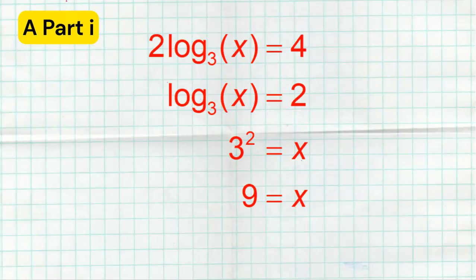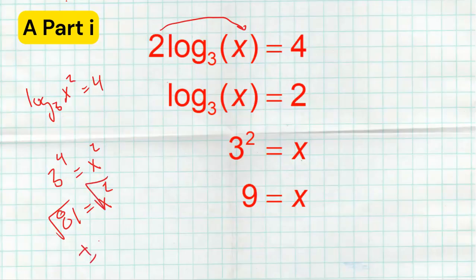Pretty easy question there. Now there is another way you could do it. You could move the 2 up as an exponent first. So you get log base 3 of x squared equals 4. Then we could write that as 3 to the 4th equals x squared. 3 to the 4th is 81 equals x squared. Then take a square root of each side and we get plus or minus 9 equals x. We've got to be super careful to not write negative 9 down as an answer because you cannot have a negative inside of a log. So x cannot be negative 9. And if you left that as an answer, there's a chance you might lose some points. But if you do it my way, the only answer you get is 9.